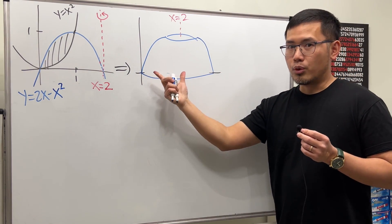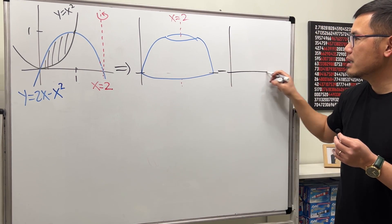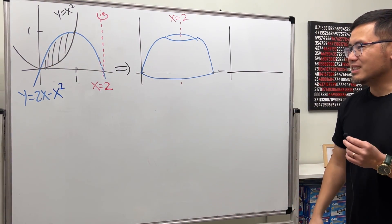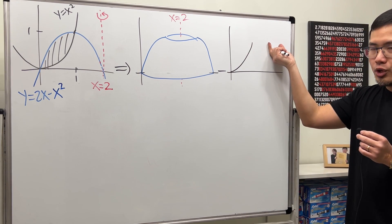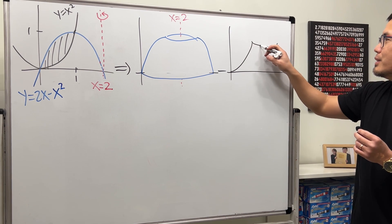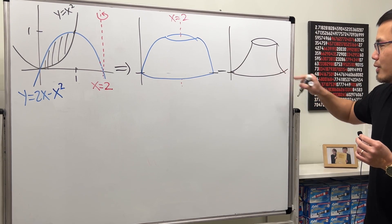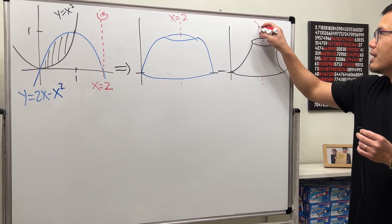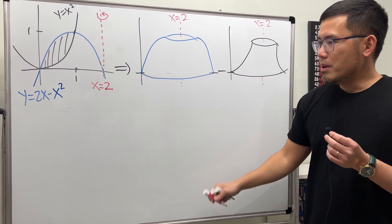After getting the outer portion, we subtract the volume of the inner part. The inner part is this portion rotated about x = 2. I'll take this portion, leave a gap, mirror the image, and draw it to make it look three-dimensional — both on top and on the bottom. That's pretty much what we'll have to do.